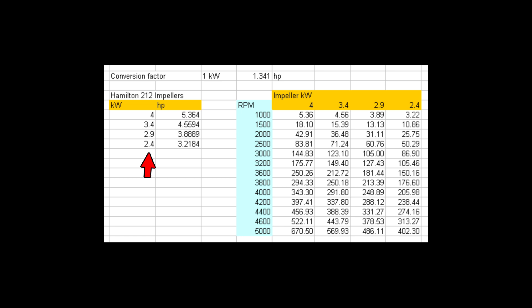Here we have listed the standard Hamilton 212 impellers in kilowatts. So you see there's the 4KW, then the 3.4, then the 2.9, and 2.4.